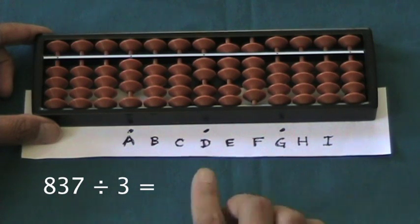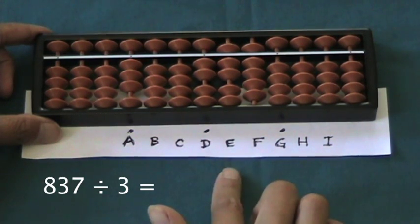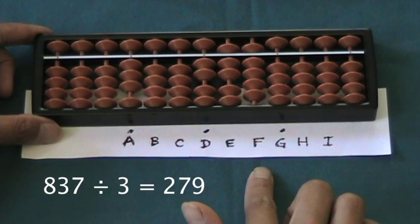We read off the quotient on rods D, E, and F. That's 279.